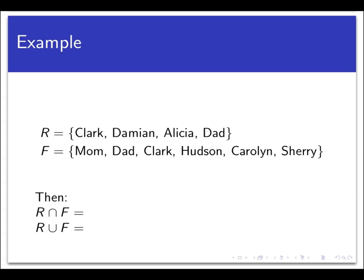Suppose my runner's group on my social network contains Clark, Damian, Alicia, and Dad, and my family group has Mom, Dad, Clark, Hudson, Carolyn, and Sherry in it. Let's call the runner's group R and the family set F. Then R intersect F would be the set of all people in my network who are both runners and family members, and that would be the set consisting of just Clark and Dad. Note that this is a set, so we're going to use correct set notation — roster notation would be enough here.